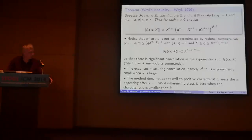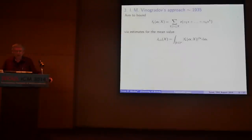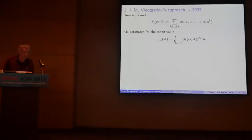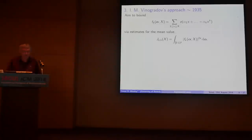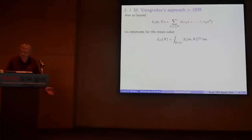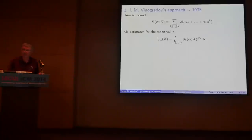I want to tell you about a method which improves on this — Vinogradov's approach, which is also old, about 80 years old. In Vinogradov's method, rather than reducing the degree of a polynomial argument, you consider the average of the exponential sum as you integrate over all values of the coefficients α. So if you integrate over all of these, you're not getting an estimate for the exponential sum directly, but you're learning about what's happening on average. Vinogradov's idea was to use this average information to say something about what happens for a fixed k-tuple α.